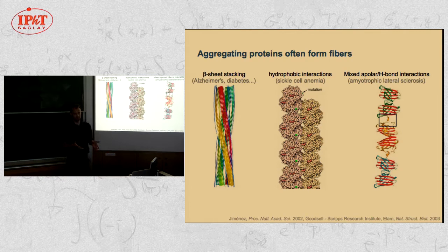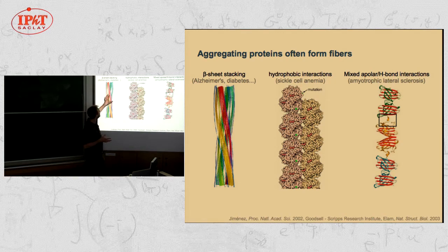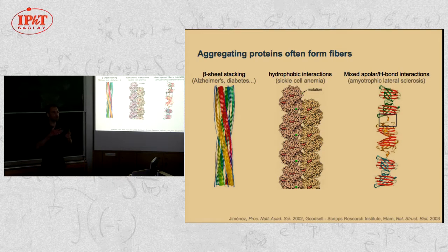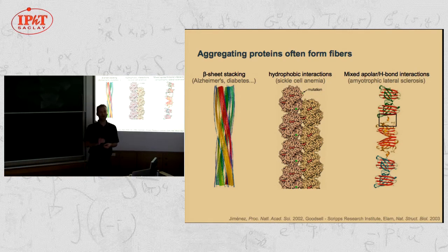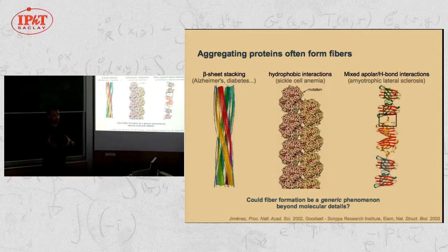These are important problems from a health standpoint, and people have been studying them for a while, typically with the approach of structural biologists. Structural biologists tell you what the detailed molecular interactions are that give you each of those structures, and in each case they largely come up with a different explanation. My goal here is not to question those explanations, but rather to take a step back and ask whether, beyond those detailed molecular differences, there could be a common generic physical reason why all those objects would have a tendency to aggregate into structures that are not amorphous clumps or crystals, but rather fibers.